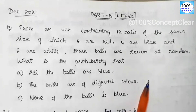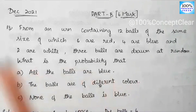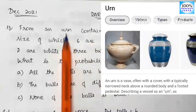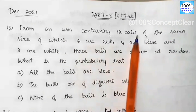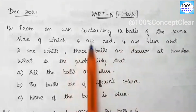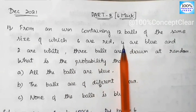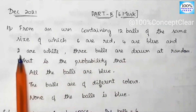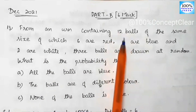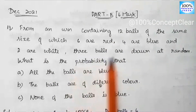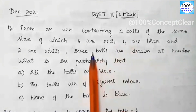This is a probability problem. We start with the urn — there is a vessel in which there are 12 balls: 6 red, 4 blue, and 2 white. In total, there are 12 balls. 3 balls are drawn at random, so from the 12 balls, we choose 3 balls.